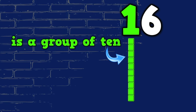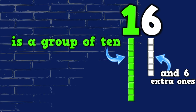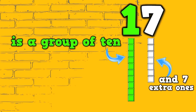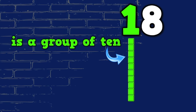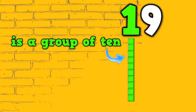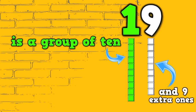Sixteen is a group of ten and six extra ones. Seventeen is a group of ten and seven extra ones. Eighteen is a group of ten and eight extra ones. Nineteen is a group of ten and nine extra ones.